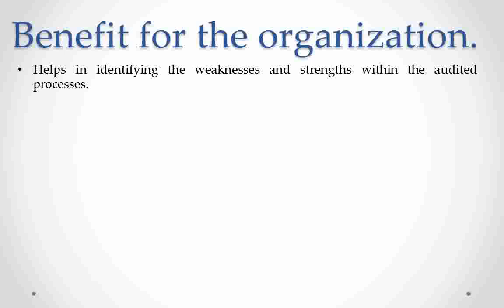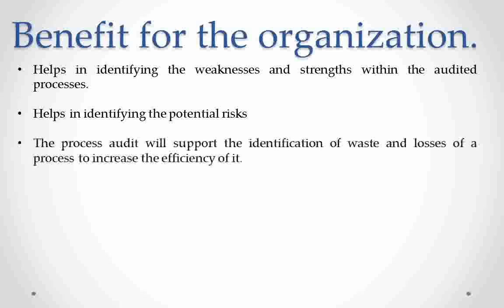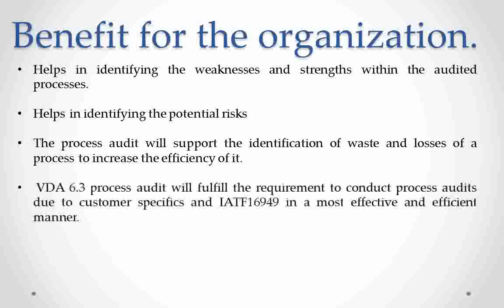VDA 6.3 helps in identifying the weaknesses and strengths within the audited process. Once you audit a process through VDA 6.3 guidelines, you identify the weaknesses and strengths and then take actions accordingly. It also helps in identifying potential risk — one of the strong points of VDA 6.3 is that it asks for identifying potential risks associated with the process, in addition to the points already in the VDA checklist, enabling timely actions. The process audit supports identification of waste and losses to increase process efficiency, and helps conduct process audits as per CSR and IATF 16949 requirements in the most effective and efficient manner, increasing the quality of your products.